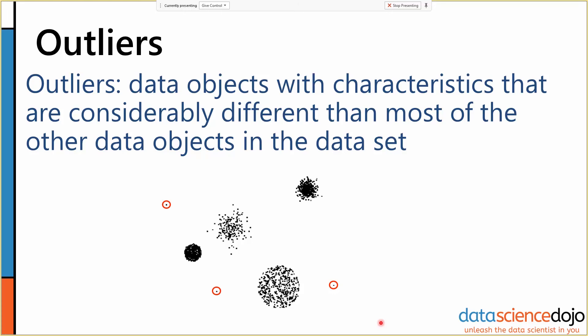So the big distinction between outliers and noise is that outliers are actually valid values. The data was collected properly, it's clean, but it's outside of the normal range. The data object for some reason doesn't look like a normal object.